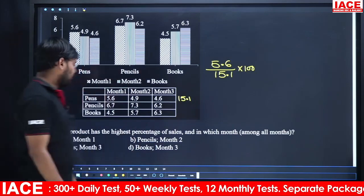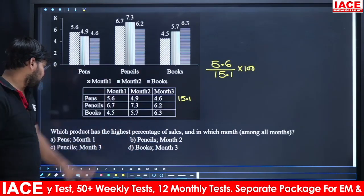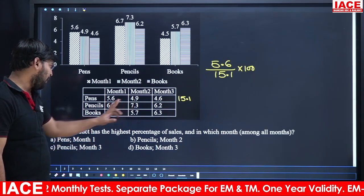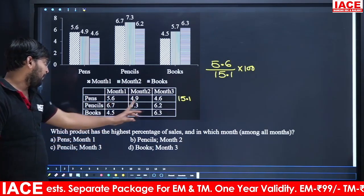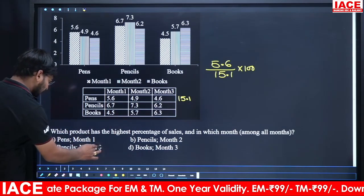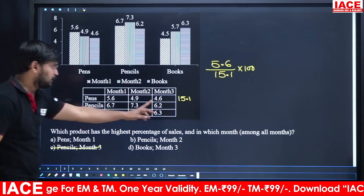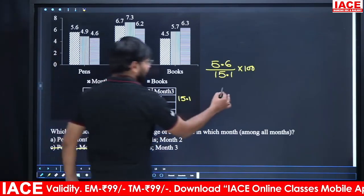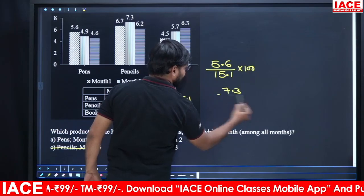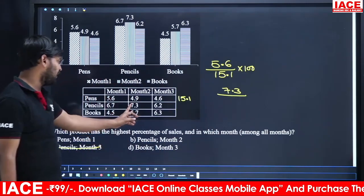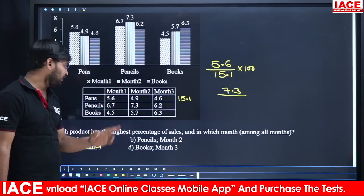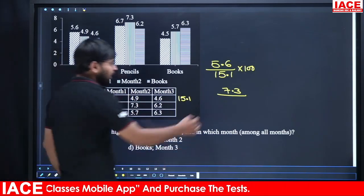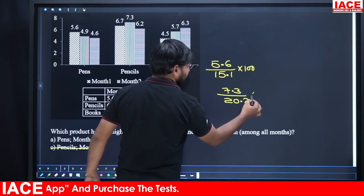Next, pencils: month 2 has 7.3 thousand, and month 3 has 6.2 thousand. The highest for pencils is in month 2 with 7.3. The total for that month is 20.2. So percentage = 73 by 202 multiplied by 100.